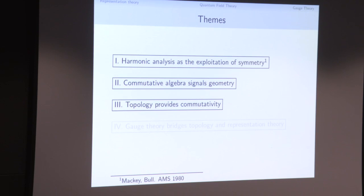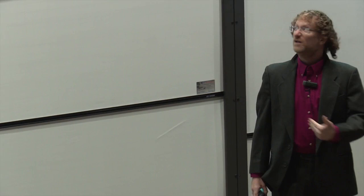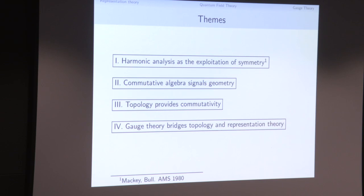Our third theme is that topology provides commutativity — by which I mean that homotopy groups above dimension one are commutative. Once you're not in one dimension, you have two points that can move around each other continuously, and that's the fundamental principle behind commutativity: two operators A times B versus B times A. The fourth theme is that gauge theory is a bridge from topology to representation theory. We're going to think of gauge theory as a way of encoding the structures of representation theory in the topology of low-dimensional manifolds.